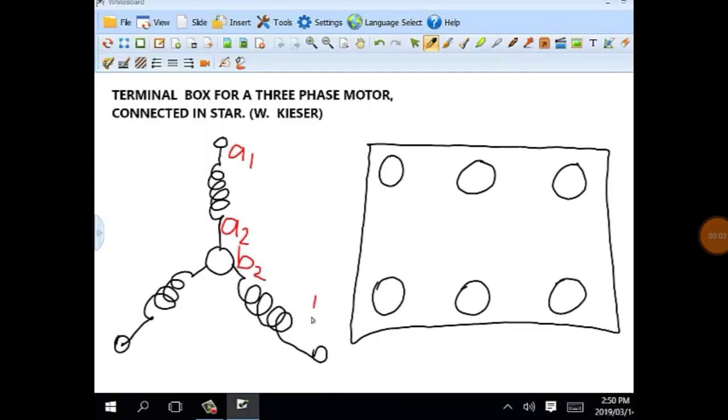We're going to connect up a terminal box for a star-connected three-phase motor. We've got three coils and they're labeled A1, A2, B2, B1, and C2, C1.